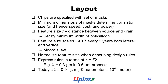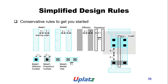Layout: chips are specified with a set of masks. Minimum dimensions of masks determine transistor size and hence speed, cost, and power. Feature size F is the distance set by the minimum width of polysilicon. Feature size scales by approximately 0.7 every 2 years in both lateral and vertical dimensions. A normalized feature size is described in terms of lambda, where lambda is half the feature size. For example, lambda is 0.3 micrometres in a 0.6 micrometre process. Today's lambda is around 10nm.